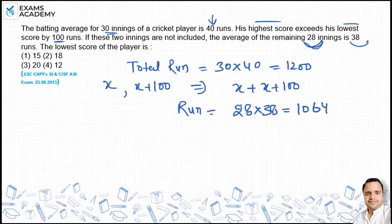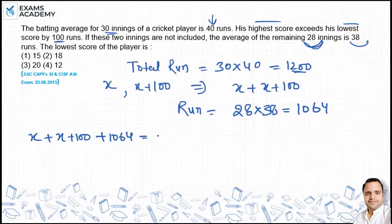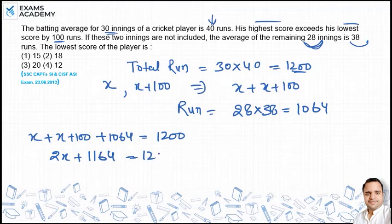The 28 innings total 1064, and these are the 2 innings. If we join them, the total should be 1200. So: x plus (x plus 100) plus 1064 equals 1200, which gives us 2x plus 1164 equals 1200.